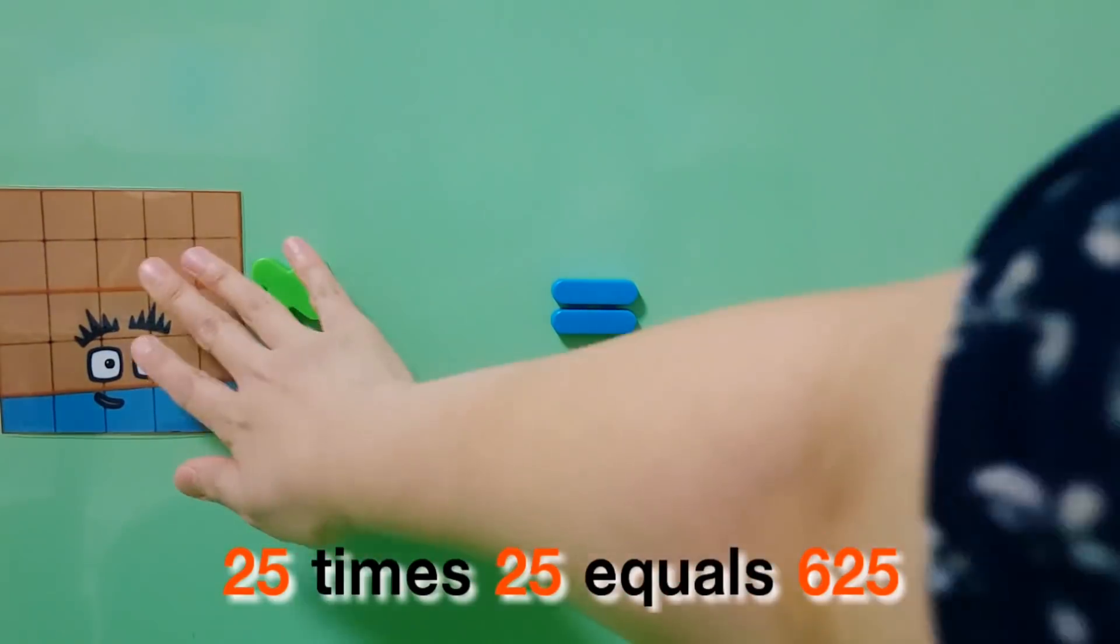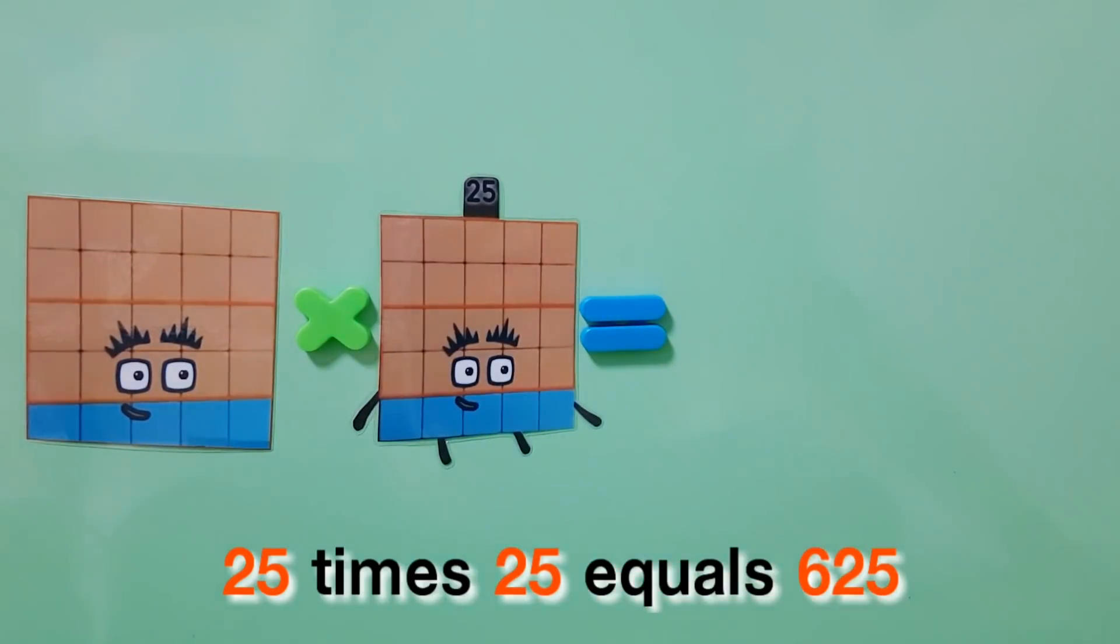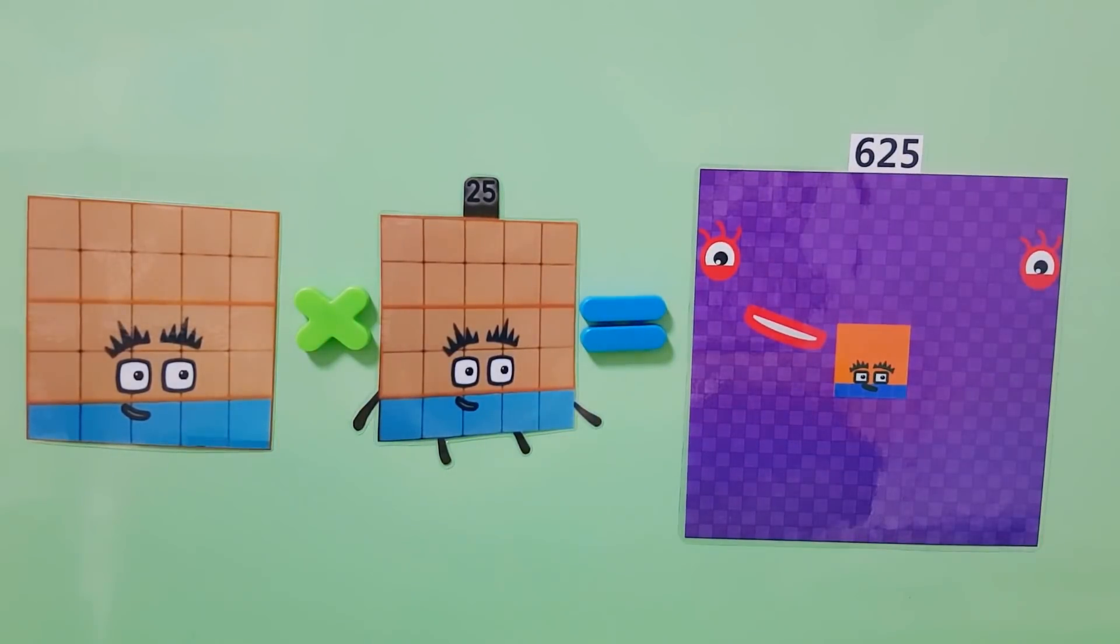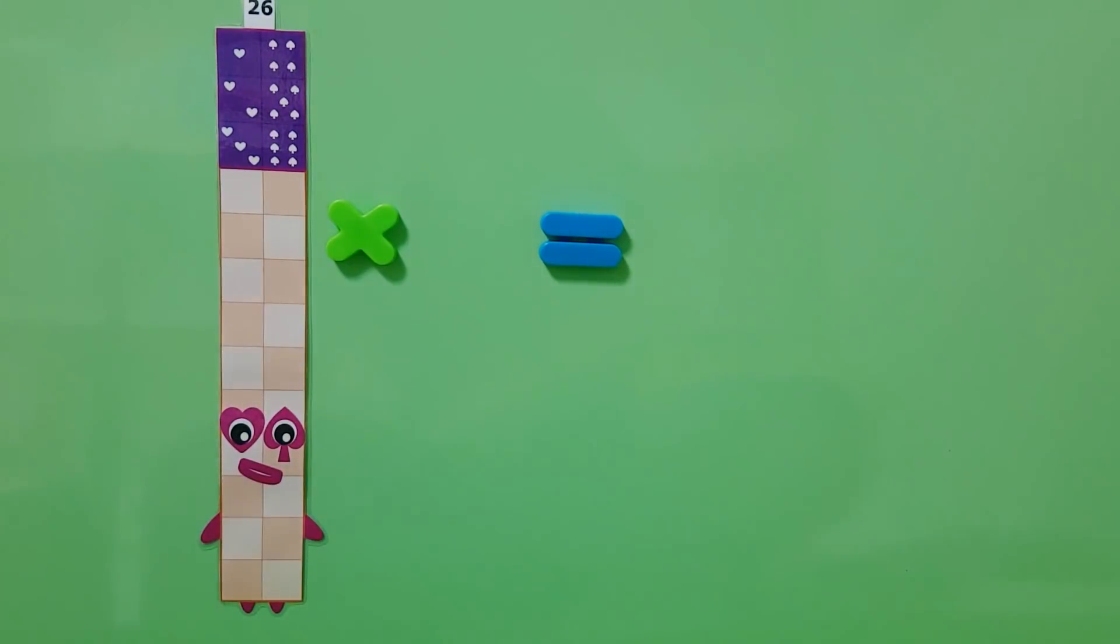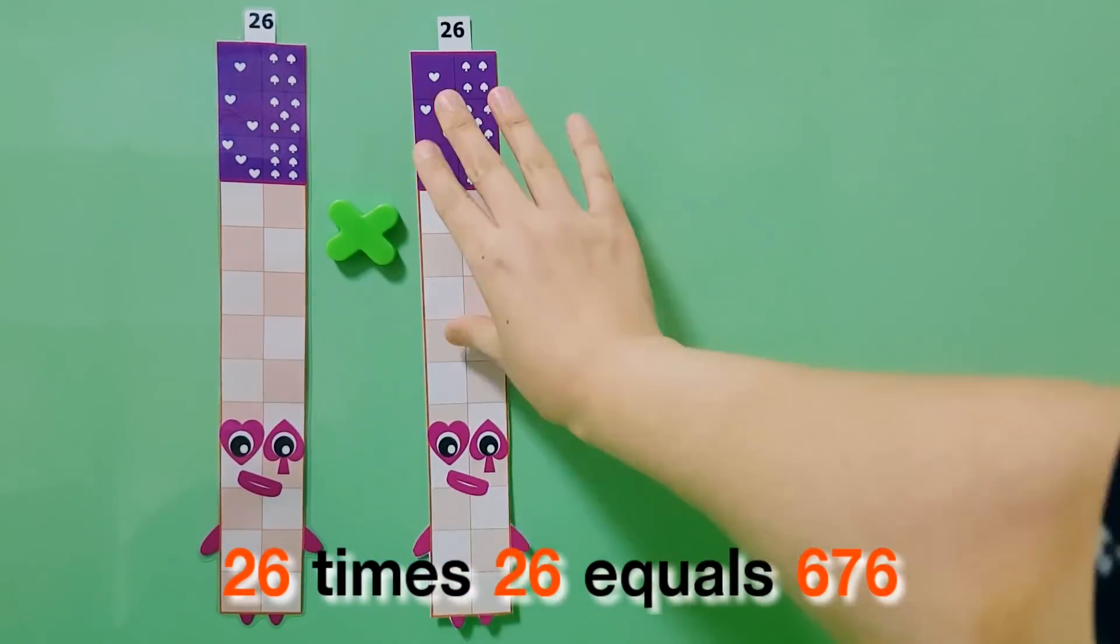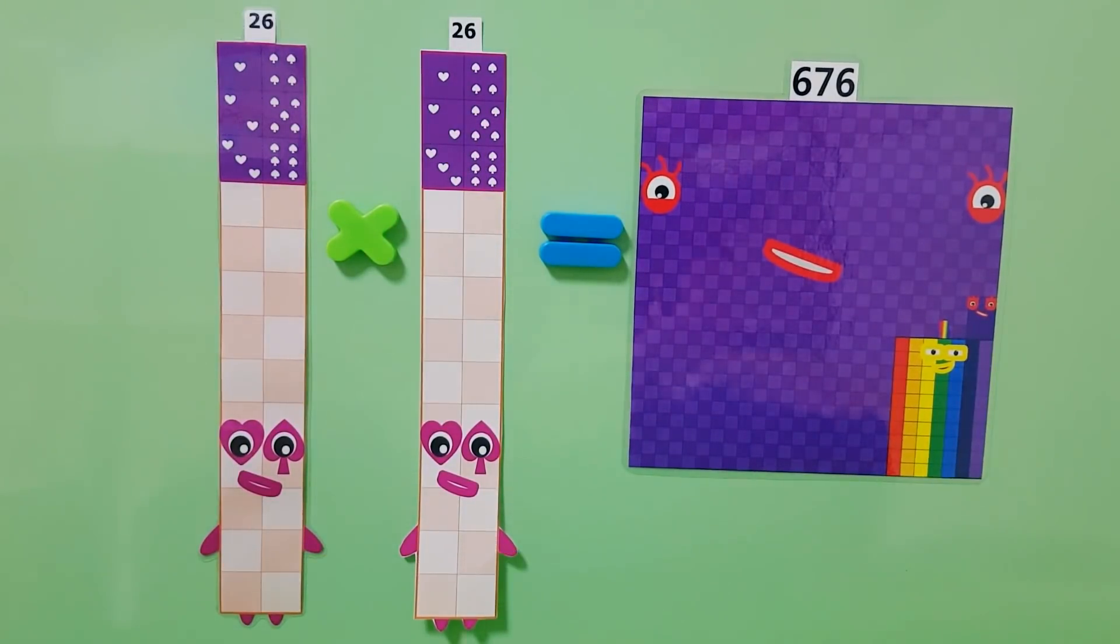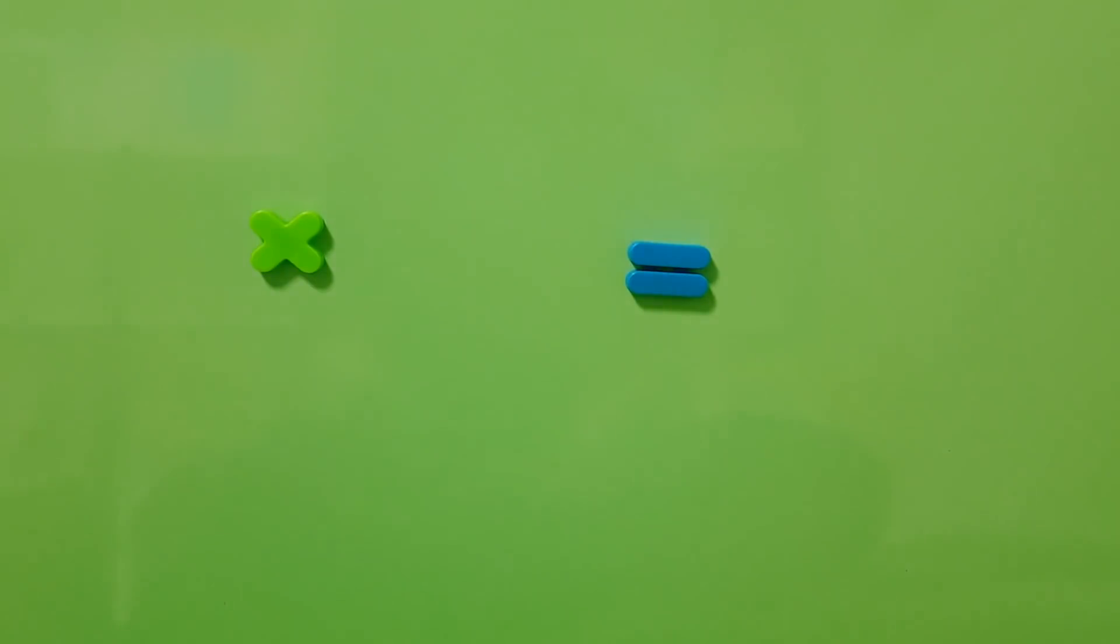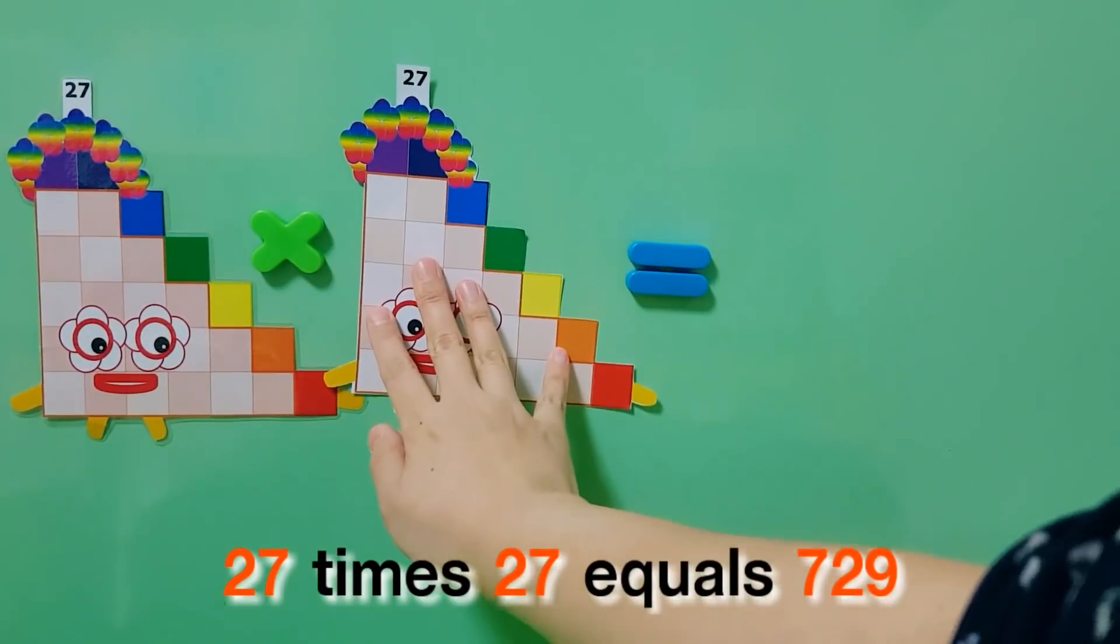25 times 25 equals 625, 26 times 26 equals 676, 27 times 27 equals 729